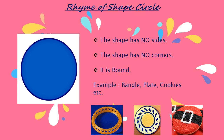Now I am going to sing a rhyme of shape circle. Are you ready? Round is a pancake, round is a plum, round like a donut, round like a drum. Round is a puppy curled up on a rug. Round are the spots on a ladybug. Look all around, look on the ground, look through the air — you will find circles everywhere! I hope you enjoyed this rhyme.